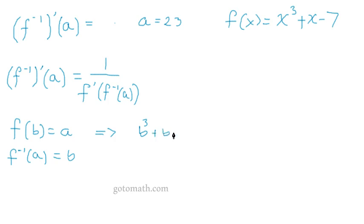So b cubed plus b minus 7 and set it equal to a. And a is 23. Now we need to find what is b.